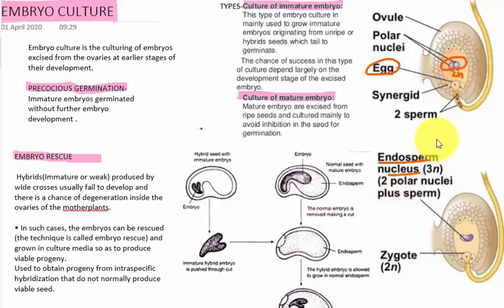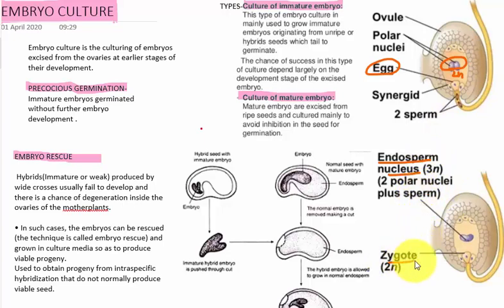Now the zygote is in 1N + 1N = 2N condition, so the zygote is 2N. The endosperm is 3N condition — 2N polar nuclei plus 1N sperm gives 3N endosperm.